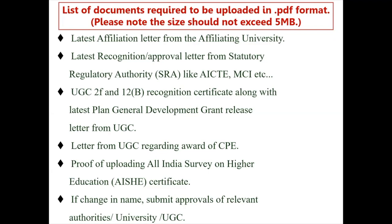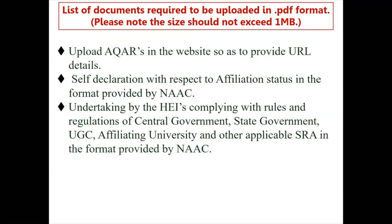If there is any change in the institution's name, upload approvals from the statutory regulatory authority or university confirming the name change has been accepted. Institutions applying for subsequent cycles — cycle 2, cycle 3, cycle 4 — must mandatorily upload their AQRs on their website; AQR is not mandatory for cycle 1 institutions. Also upload the self-declaration and undertaking in the specific format available on www.naac.gov.in — it must not be altered or deleted.